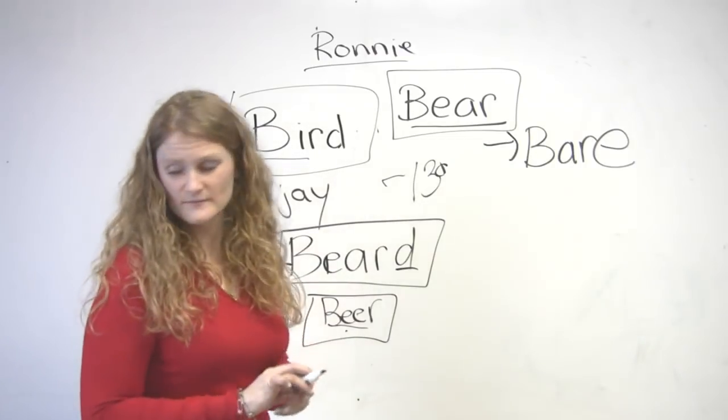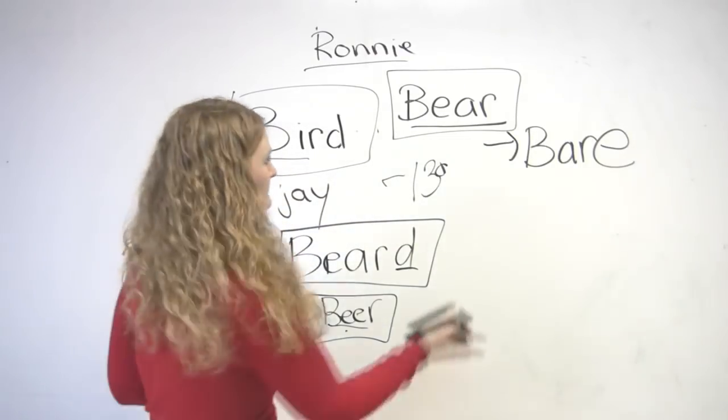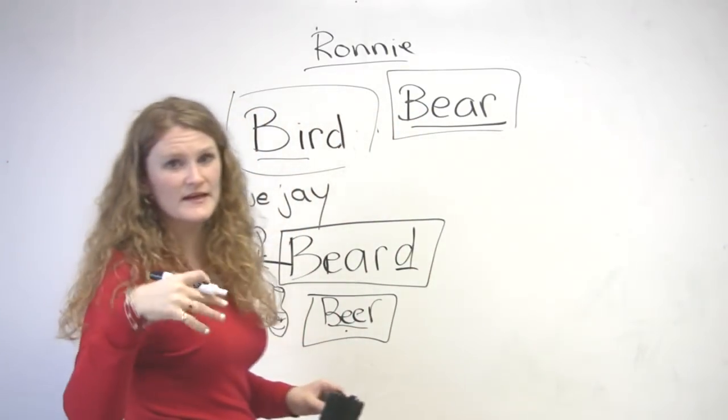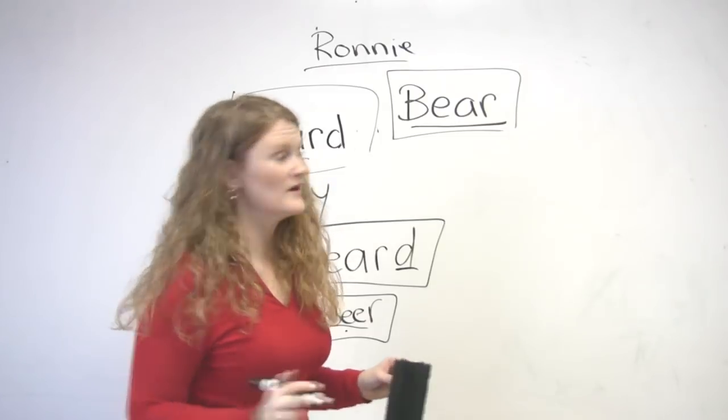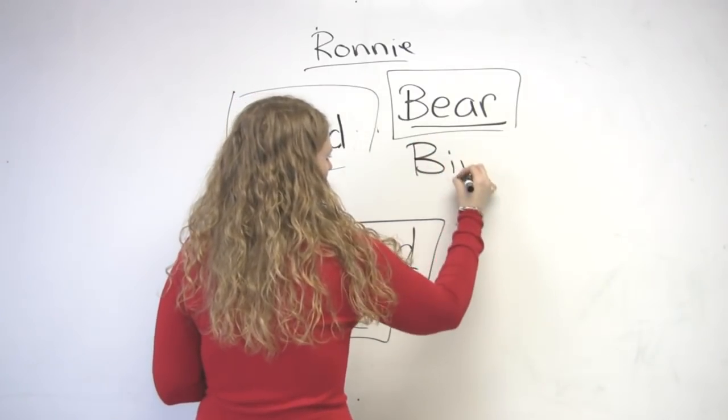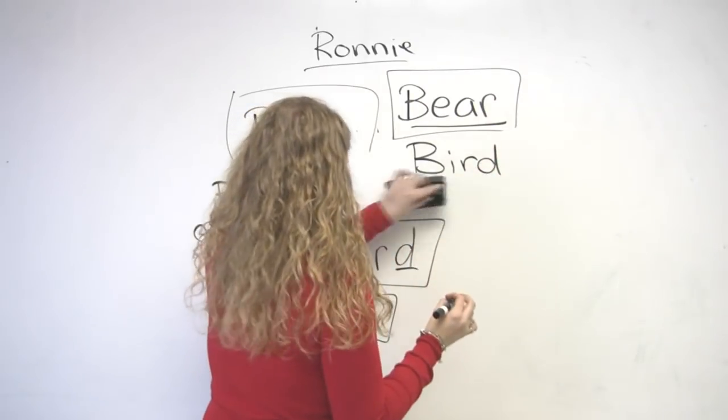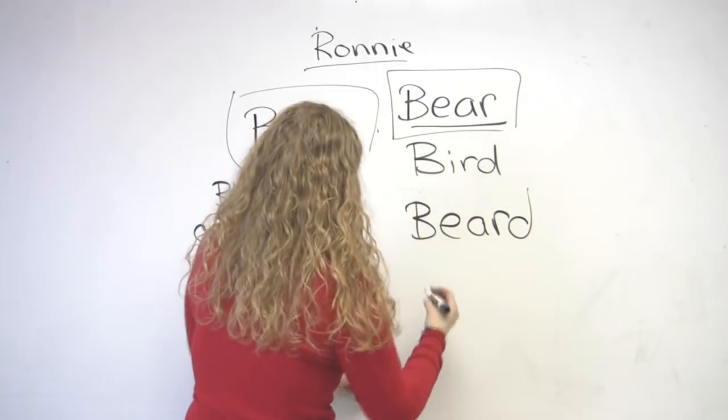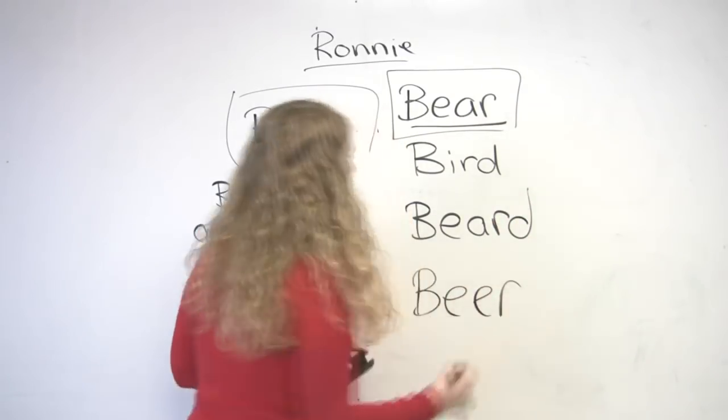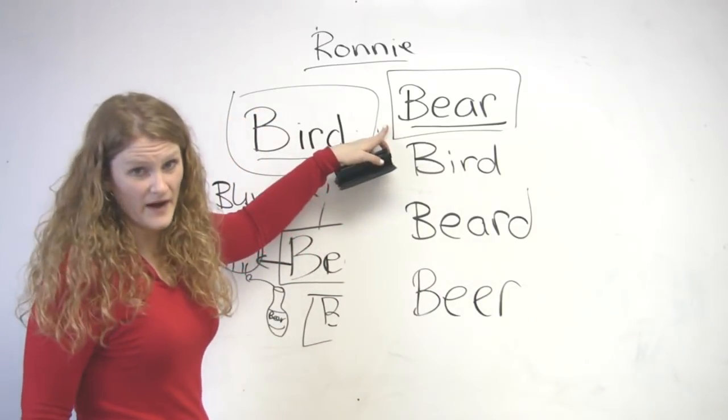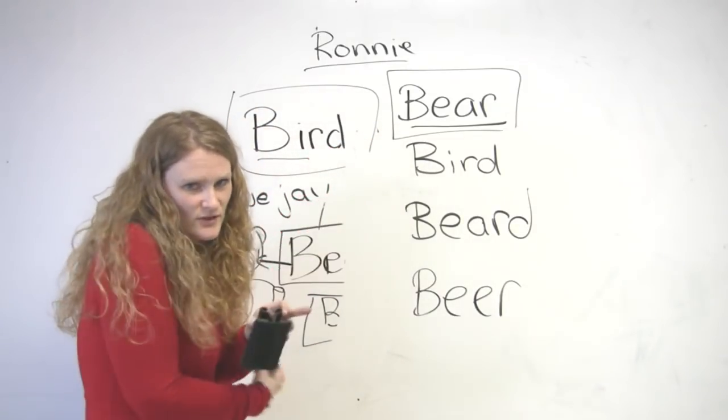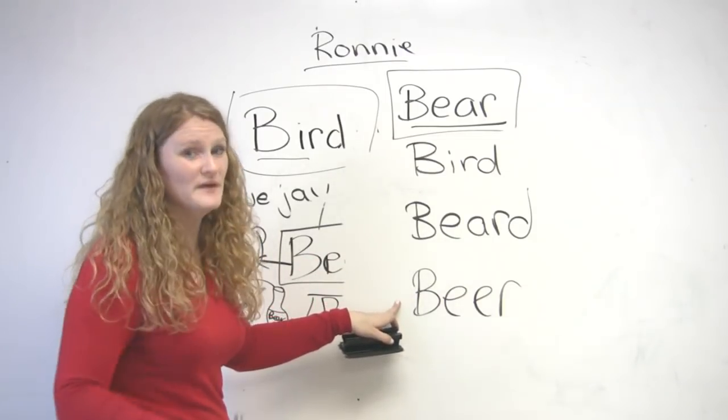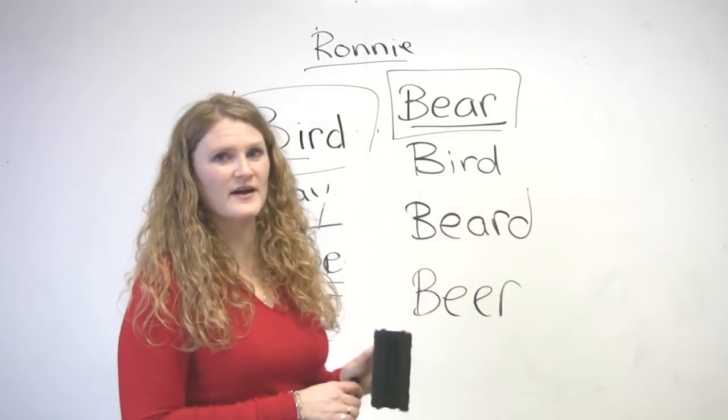This is the hard part. What I'd like you to do to practice this at home is to say all of these words one at a time. We have bear, bird, beard, and beer. So, please give that a try at your house.